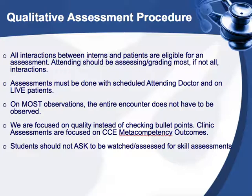We want to focus on quality instead of checking bullets. On our history example, we don't want to ask: did they ask where it hurts, when it hurts, how much it hurts? We don't check or grade individual bullet points. We may ask a question such as: 'student covered the appropriate content while taking a history.' This means a history for a patient with a focal complaint will look very different than one with three or four global complaints. Meta competencies are focused on quality, not quantity, so we assess how well the student performed each component.